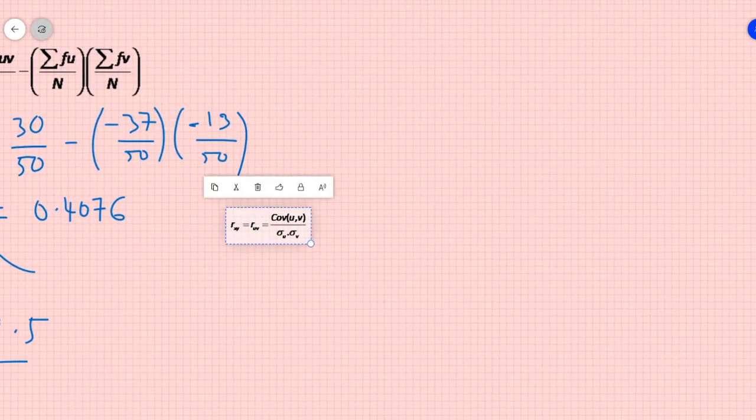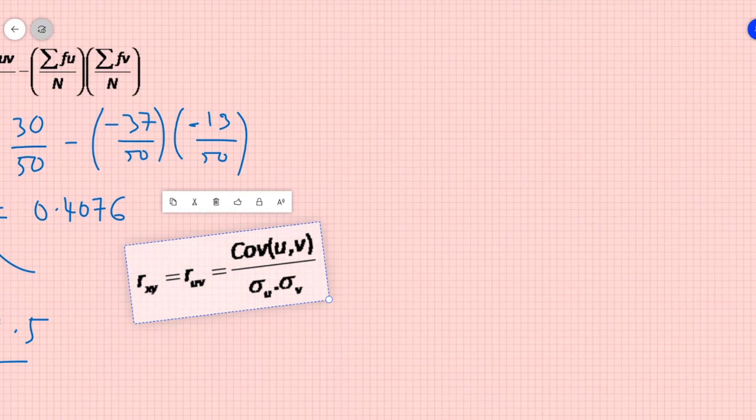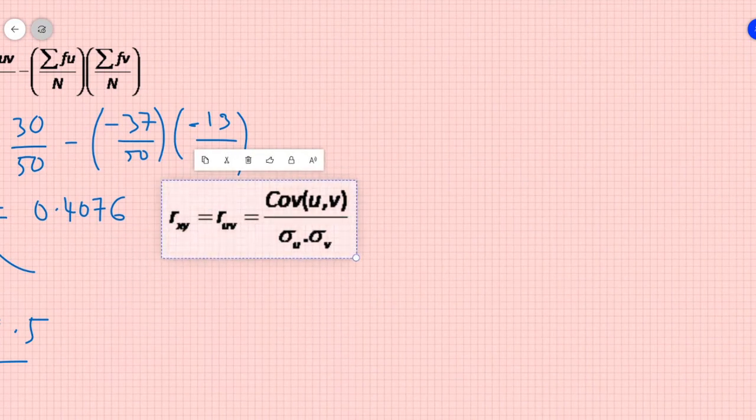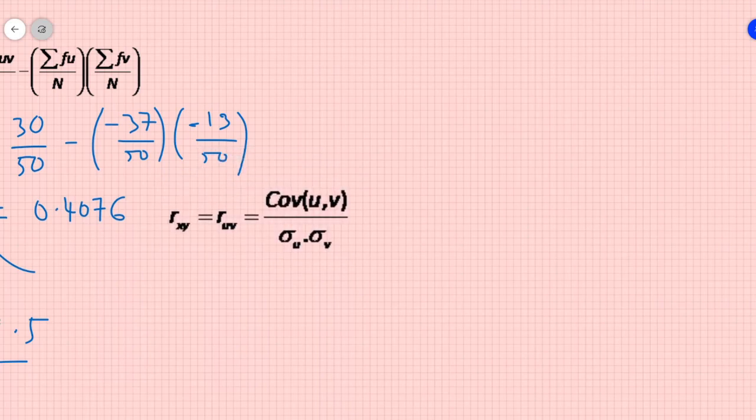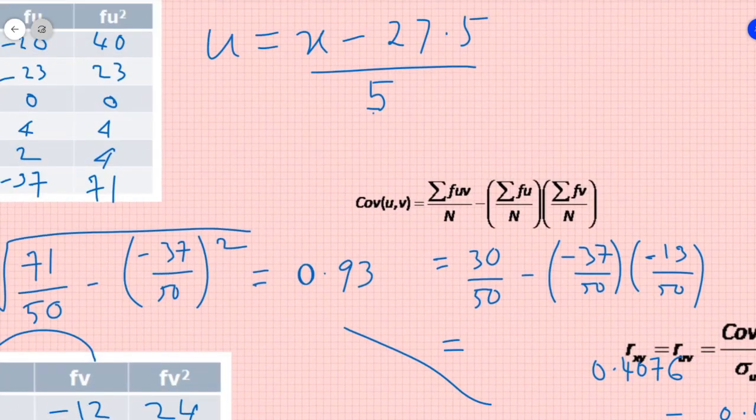Now, correlation coefficient between x, y is nothing but correlation coefficient between u and v, which equals covariance of uv divided by sd of u into sd of v. We calculated this as 0.4076 divided by sd of u was 0.93 and sd of v was 1.02. So that will give me 0.43. So correlation coefficient between x and y for this particular two-way frequency table is 0.43.